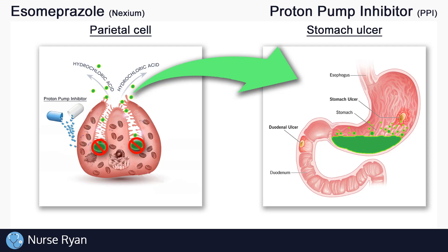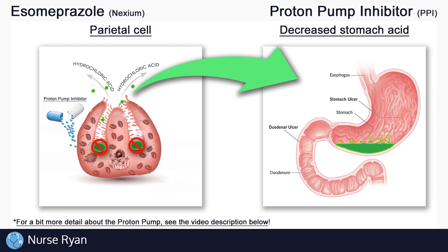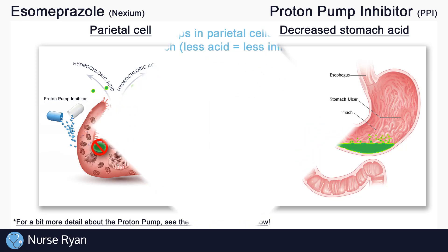As the name suggests, proton pump inhibitors work by inhibiting or blocking the proton pumps in the parietal cells of the stomach, essentially reducing the amount of acid in the stomach. This reduced stomach acid can help to treat GERD, peptic ulcers, and more.